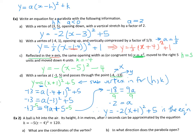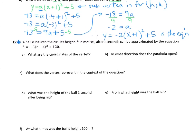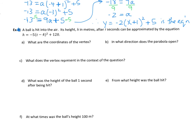And I have an example 2 here, because it came from another handout that we did. A ball is hit into the air, its height is given by this equation, height is in meters, t seconds can be approximated by this equation here. What are the coordinates of the vertex? So if I look at that equation there, my vertex comes from here and here, remember switch the sign so it's going to be positive 4 and 120. Those are the coordinates of the vertex.